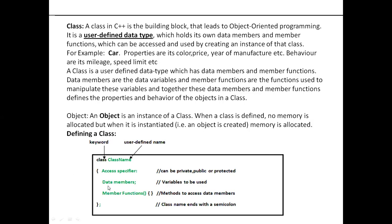Then the data members of that class, then the member functions. The data members are nothing but the properties — or attributes — of that class. The member functions can be called the behavior of that class, functions of that class, or operations performed on that class. When we go through an example, you will understand much more about this syntax.